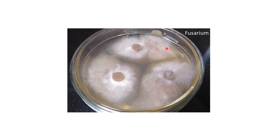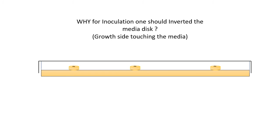It depends on you how many discs you want to inoculate per plate — you can inoculate a single disc at the center or three at the periphery. This also helps you see how the colony is growing and whether there is contamination. All three colonies should have the same characteristics. As noted in my slides, inoculation should be done with the disc inverted — that is the proper way.